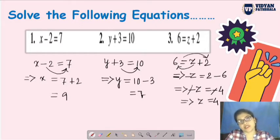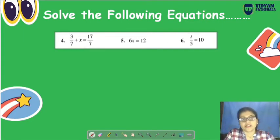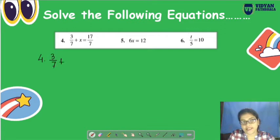This question is 6 equals z plus 2. If you keep z on one side, suppose z comes to this side, then what happens? Minus z and 2.